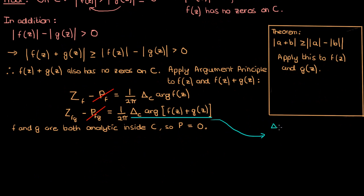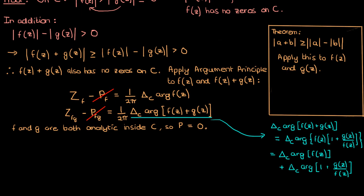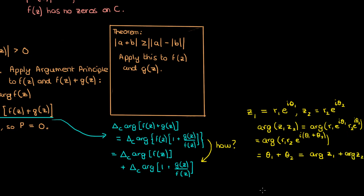Let's take the change in argument of f plus g and analyze it. We can start by factoring f out within the argument expression, giving the argument of f(z) times (1 + g(z)/f(z)). The argument of a product is the sum of the individual arguments. To see why: if z1 has argument θ1 and z2 has argument θ2, then z1 times z2 has argument θ1 plus θ2, because multiplying exponentials adds their exponents. This allows us to split up the functions inside the argument.